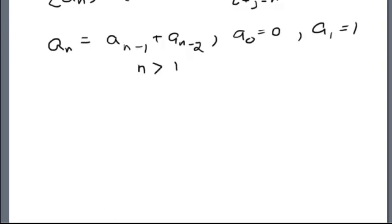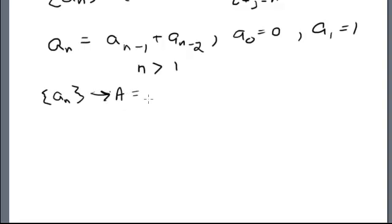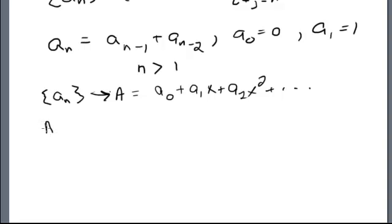Let's go ahead and do that. I'm going to assume there is a sequence — called the Fibonacci sequence — that solves this relation. I'm going to assume a sub n is such a sequence, and I'm going to represent that with its generating function: a₀ plus a₁x plus a₂x² plus dot dot dot.